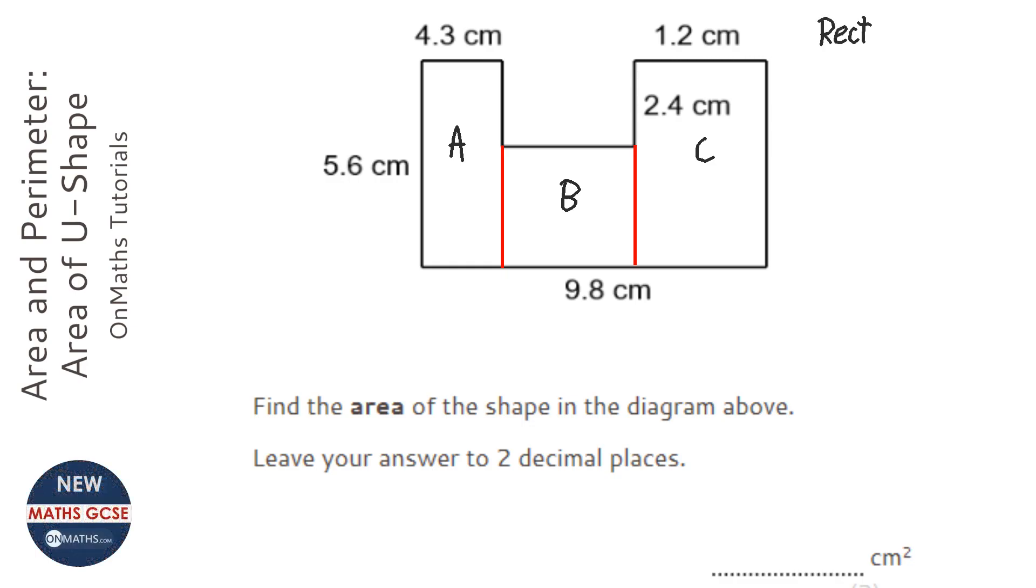Rectangle A is first, and that's 4.3 times 5.6. On my calculator, 4.3 times 5.6 gives me the answer of 24.08.